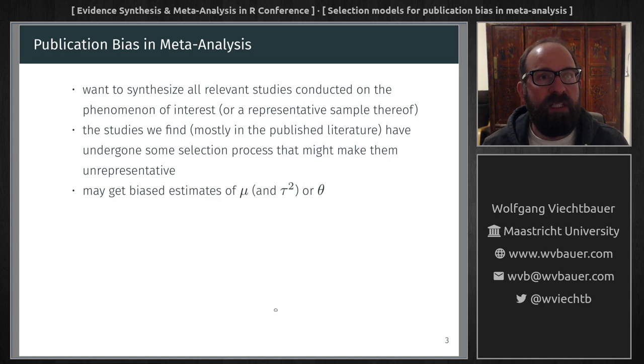Now, a major concern in meta-analysis is publication bias. We want to synthesize all relevant studies on the phenomenon, or at least a representative sample of them, but the studies we find mostly come from the published literature. And those studies have undergone a selection process and as a result, they may no longer be representative of all of the research that has been conducted on a phenomenon. And this may lead to bias in our estimates from our meta-analysis.